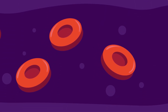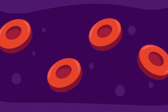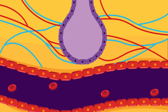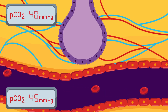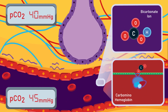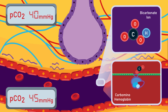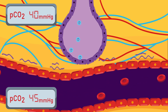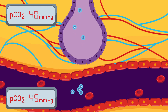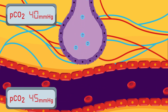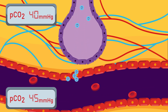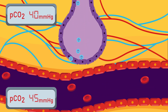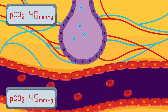Carbon dioxide is then carried back to the lungs. In the lungs, there is a higher concentration of carbon dioxide, carried in the blood as bicarbonate ions and carbaminohemoglobin. Carbon dioxide diffuses out of the capillary into the alveoli, and during expiration, carbon dioxide is expelled from the lungs.